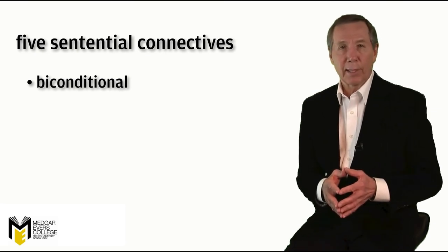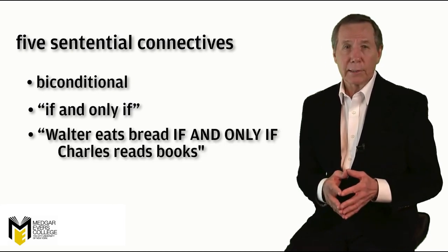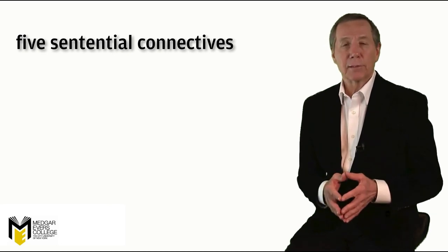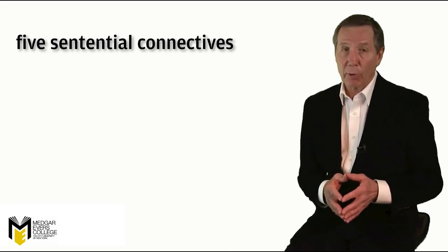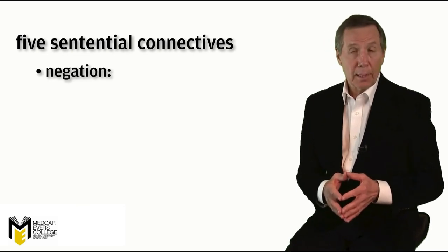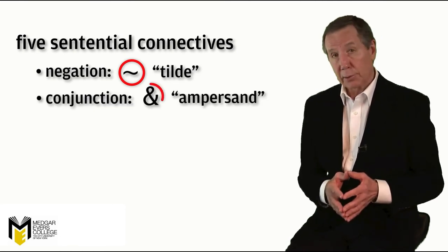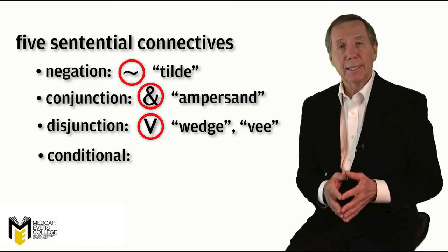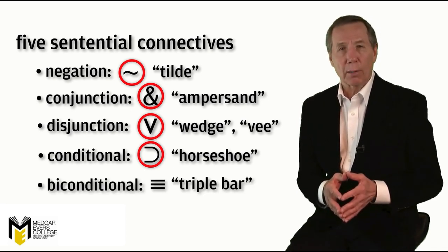Last, the biconditional, expressed in English by the phrase 'if and only if.' For example: 'Walter eats bread if and only if Charles reads books.' As with atomic statements, each of these five connectives can be symbolized, but unlike the capital letters used to symbolize atomic sentences, their meanings can never change — they are logical constants. For negation we'll use the tilde; for conjunction, the ampersand; for disjunction, the wedge or V; for the conditional, the horseshoe; and for the biconditional, the triple bar.